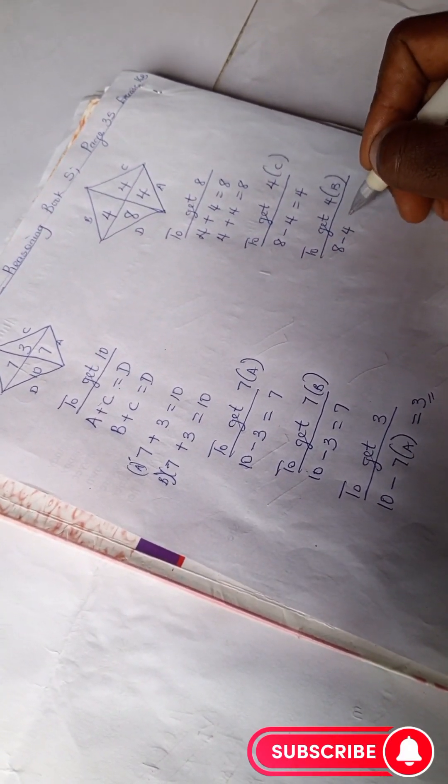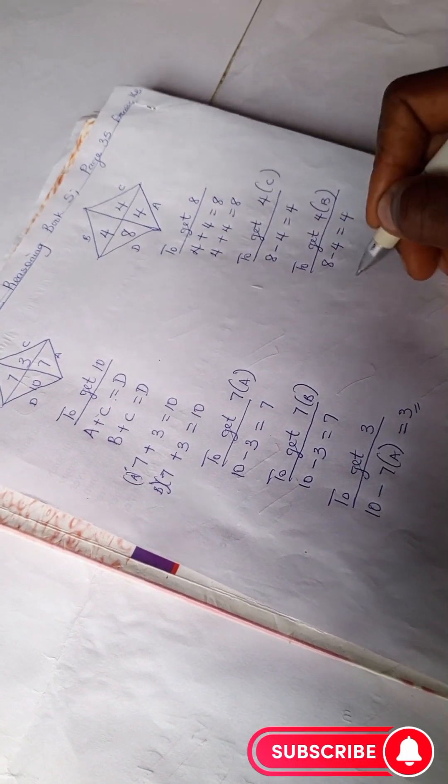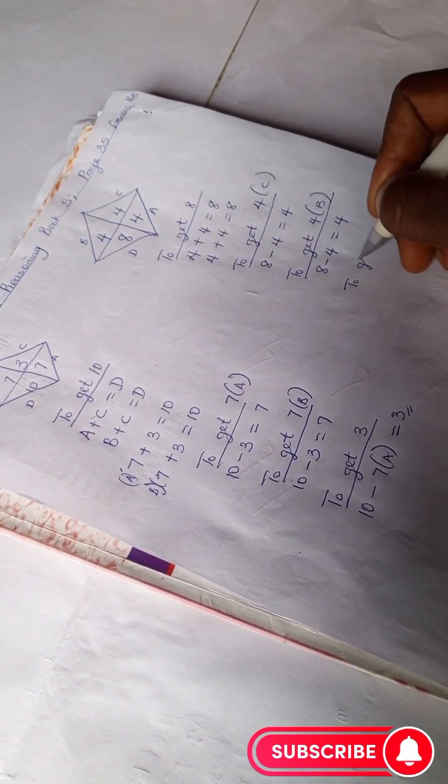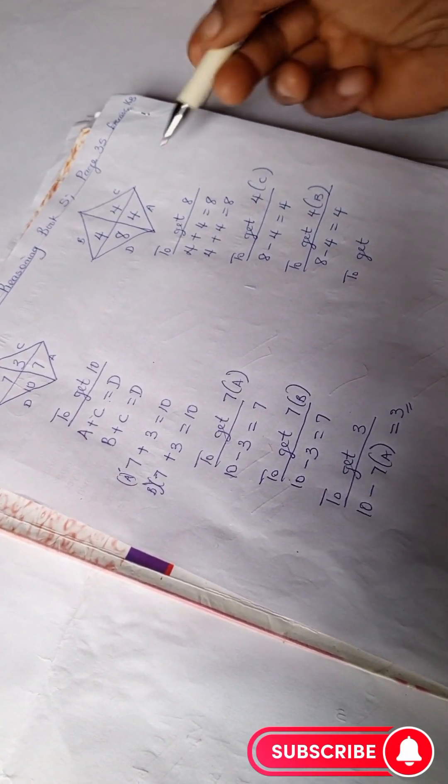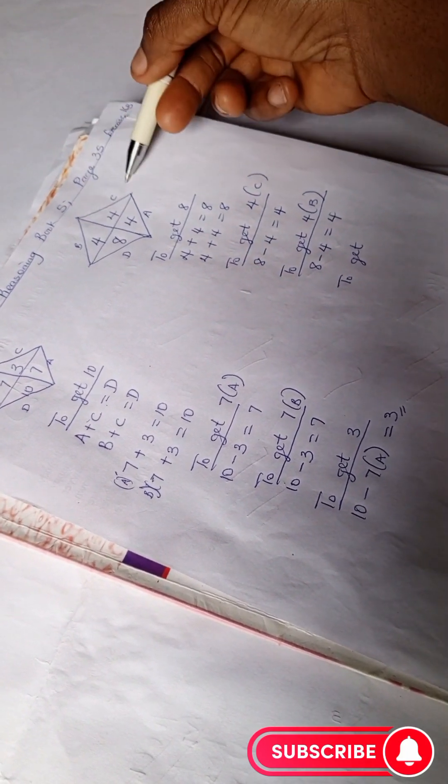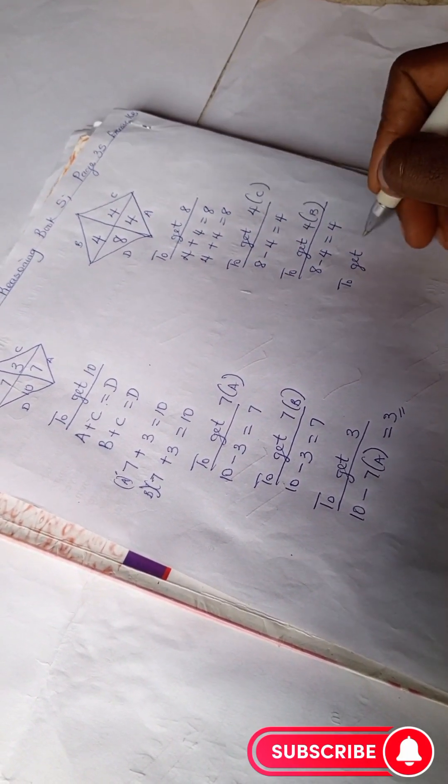And to get our other four, we've gotten our B and C, so let's get our A4. We have our eight minus four and we have our four.